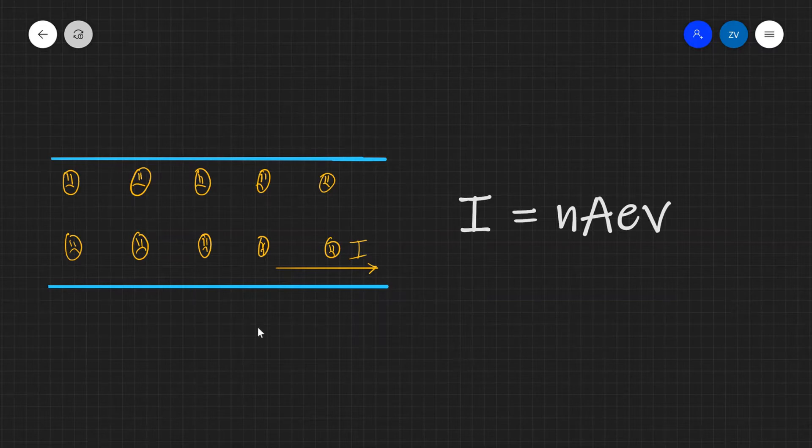Hi everyone, welcome back to Z-Physics. Today we're going to be talking about current and also the speed at which charge carriers move through a current carrying wire.